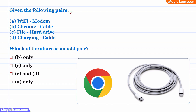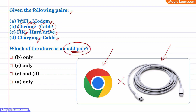Question: Given the following pairs, which is an odd pair? Wi-Fi and Wi-Fi modem are directly connected. File and hard drive are directly connected. Laptop/phone charging and cable are directly connected. However, Chrome is a browser and cable is something used to connect hardware — there is no direct connection between Chrome and cable. Therefore, Chrome and cable is the odd pair, and B only is the answer.